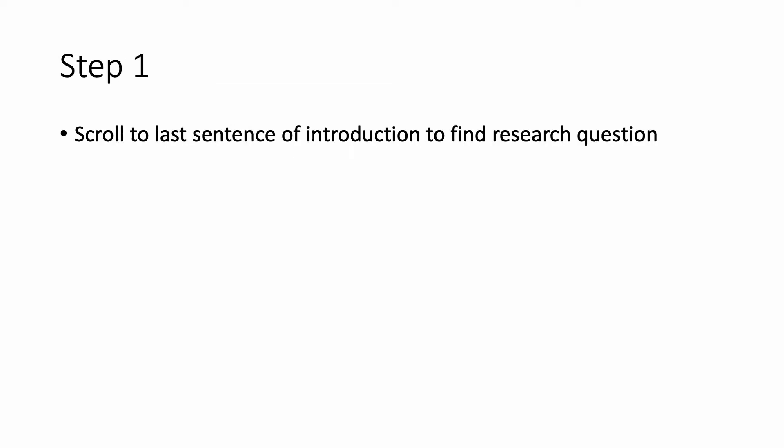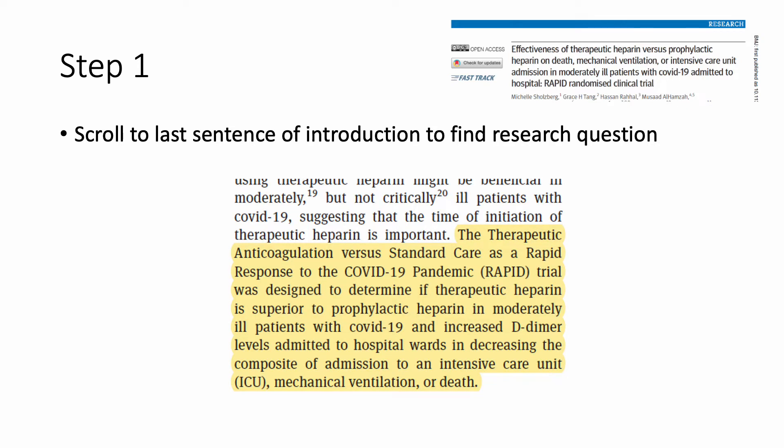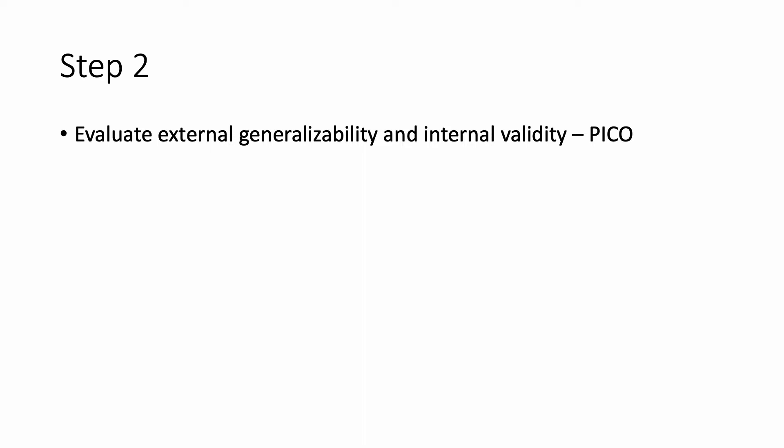So step one — let's scroll to the last sentence of the introduction and find the research question. For this video, I'm going to be focusing on the RAPID trial. Dr. Michelle Schulzberg was the lead author, and I was a part of this trial. The RAPID trial was designed to determine if therapeutic heparin is superior to prophylactic heparin in moderately ill patients with COVID-19 and increased d-dimer levels admitted to hospital wards. Now we know our research question and can use the PICO framework.